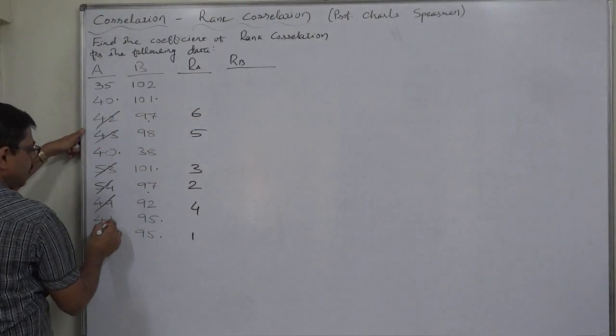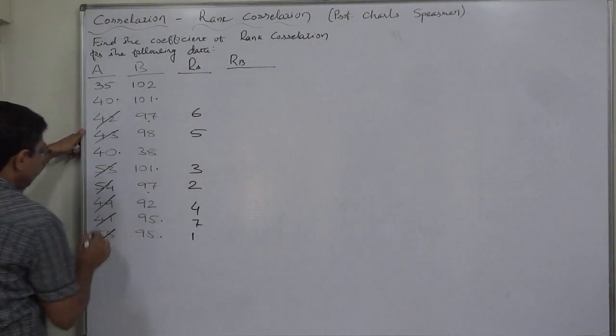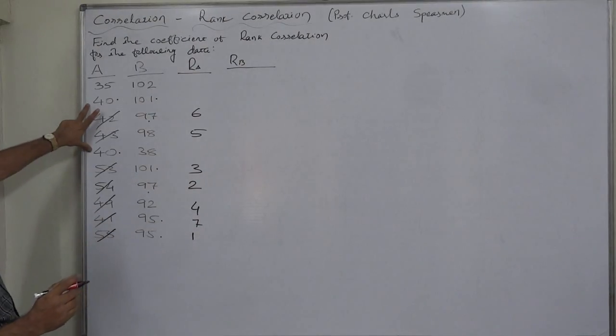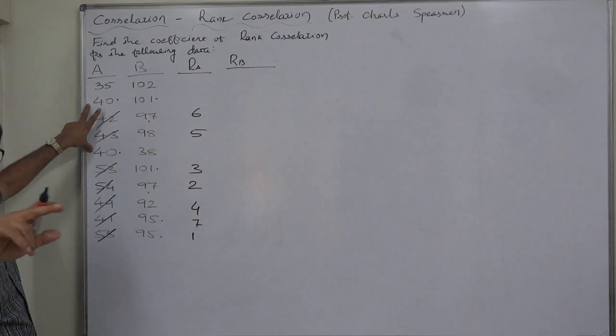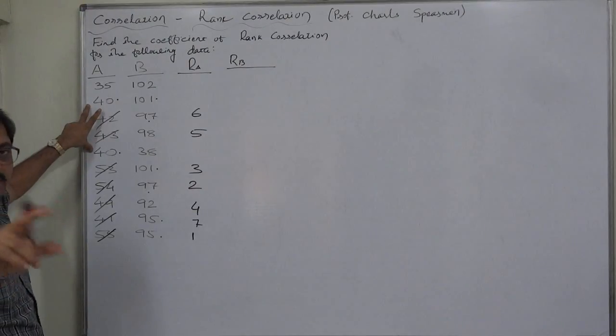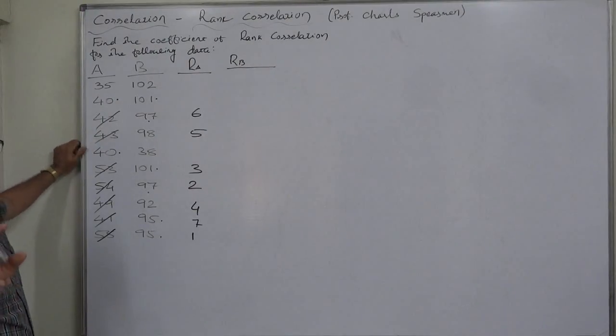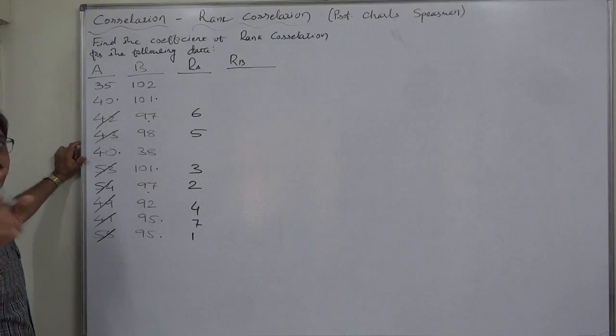42 rank 6, 41 rank 7. Now it is turn of 40. We cannot assign 8 and 9 to same value 40 at two different places. So, it is logical to take mean of these two consecutive ranks 8 and 9.